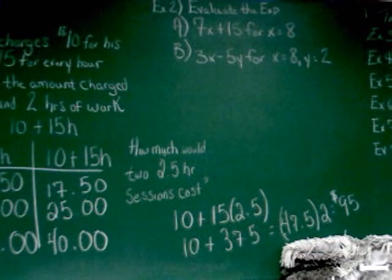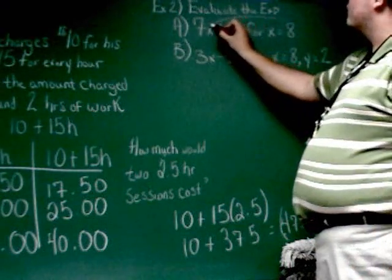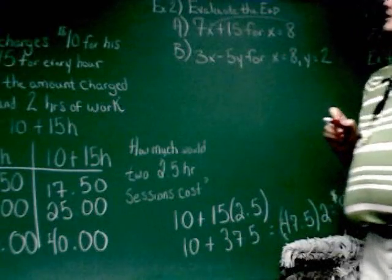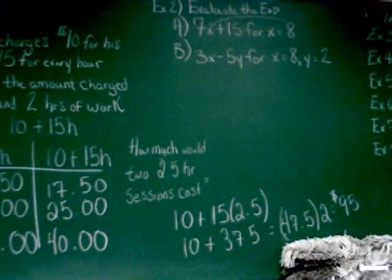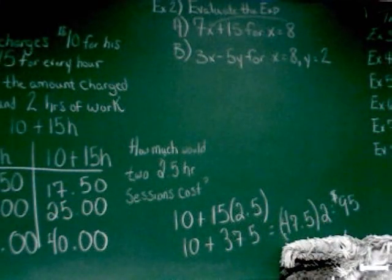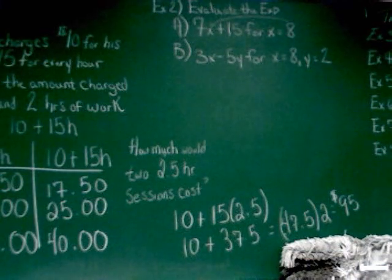So that means I've just simply got to put 8 in for x. Well, 7 times 8 would give me 56, and when I add 15, 71.